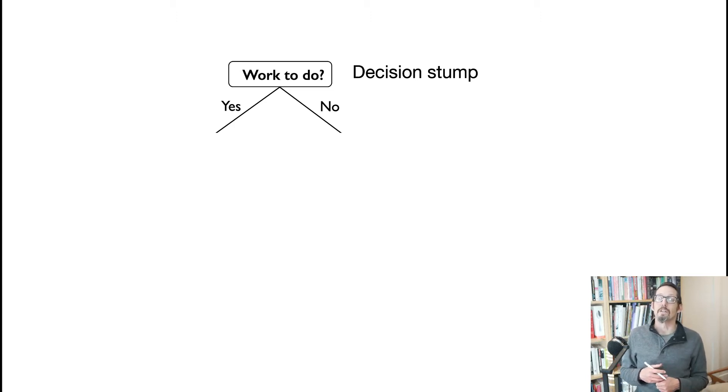So we need to start with some feature of the day and decide how to make our choices along the choose your own adventure path of our day. So if our decision stump, if our root of our tree starts with, do we have any work to do to help us decide what we're going to do today? Well, then we have to branch on from here. We have two choices about whether we have work, yes or no. What happens next?